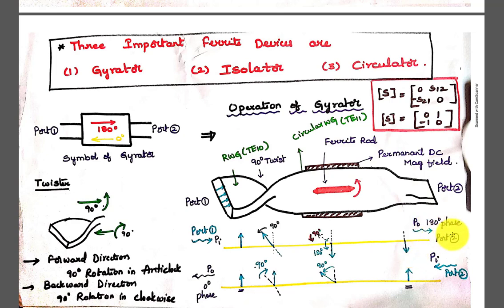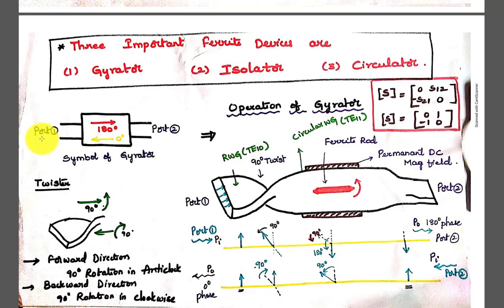Finally, the output observed at port 2 is the same as the input with a phase shift of 180 degrees. According to the gyrator principle, if the signal transmits from port 1 to port 2, it offers 180 degrees — so that condition is satisfied.